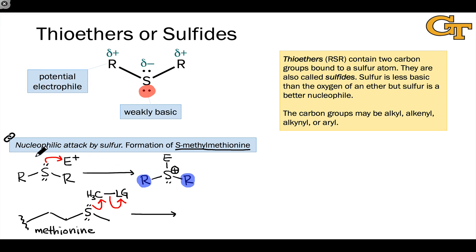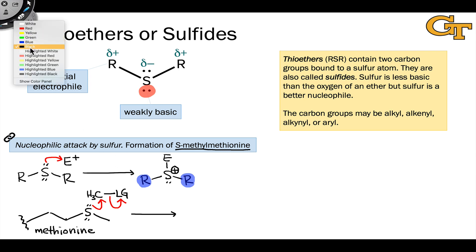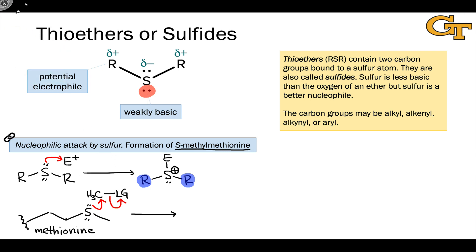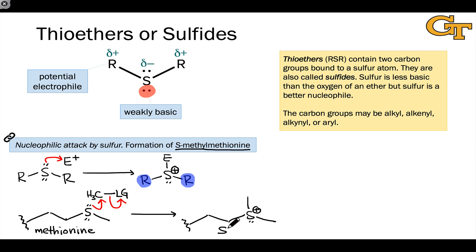This is analogous to the general electron flow shown above — it's just that there's an additional flow of electrons within the electrophile to kick off a leaving group. After this happens, the resulting structure contains a positively charged sulfur atom. This is S-methylmethionine, or as it's known in the brewing world, SMM.